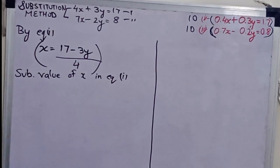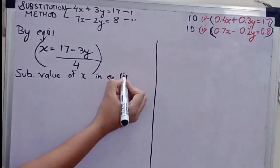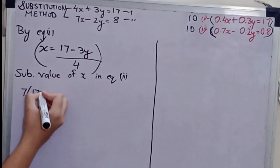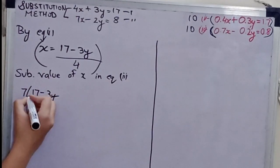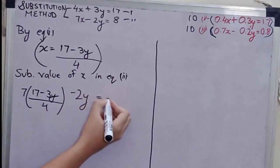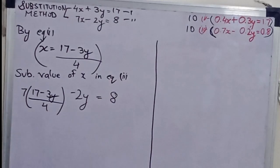Let us say by equation 1: X is equal to 17 minus 3Y divided by 4. Now substitute value of X in equation 2. So 7 times (17 minus 3Y) divided by 4 minus 2Y equals to 8.